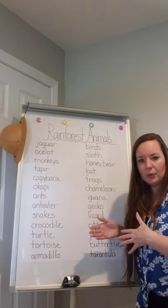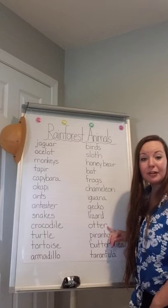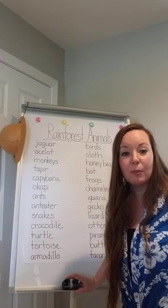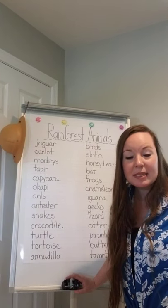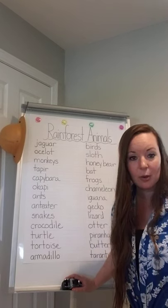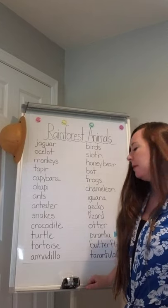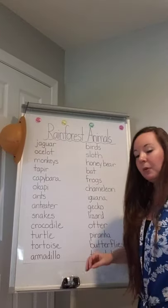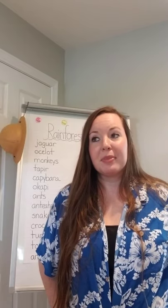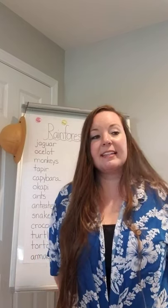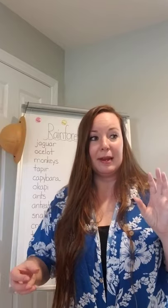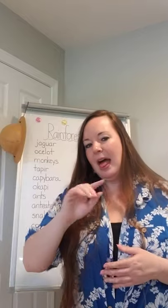Next up are iguanas, geckos, and lizards — we already learned a lot about them when we talked about reptiles versus amphibians. Otters: you'll see a lot of little river otters in the rainforest. The Amazon rainforest — which is where you might recognize 'Amazon' from online shopping — is in South America and is the biggest rainforest in the world. It has the Amazon River running right through it, with river otters swimming around. Also in the Amazon River you'll find piranhas, which swim in schools and have big teeth, looking for blood in the water similar to how sharks do.